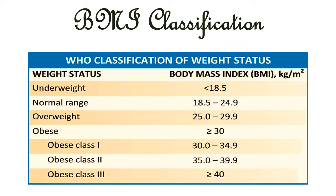Now let's look at the WHO classification of weight status. A body mass index of less than 18.5 kg per meter square is considered underweight. That in the range of 18.5 to 24.9 kg per meter square is considered in the normal range. A BMI between 25 to 29.9 kg per meter square is considered overweight, and a BMI equal to or above 30 kg per meter square is considered obese. Obesity can be classified into three classes: class 1 is 30–34.9, class 2 is 35–39.9, and class 3 is 40 or above kg per meter square.